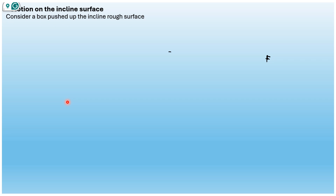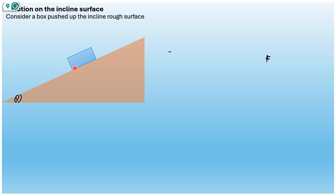Good day. Today we are going to talk about motion on an incline surface. Let's have an incline surface like this and assume that we have a box here. We have an angle of the incline and a box — this is the angle of the incline and this is the box.